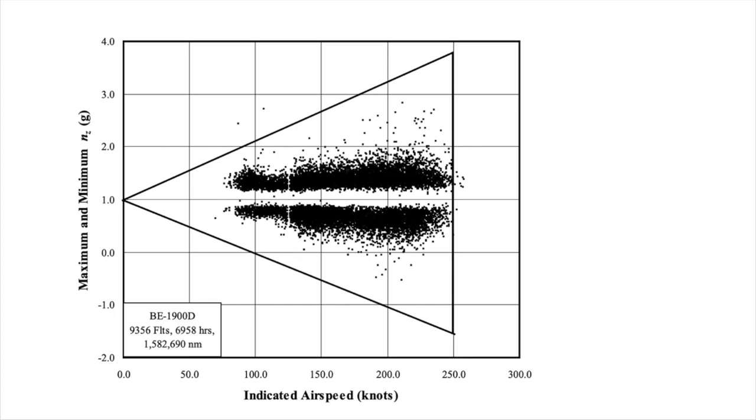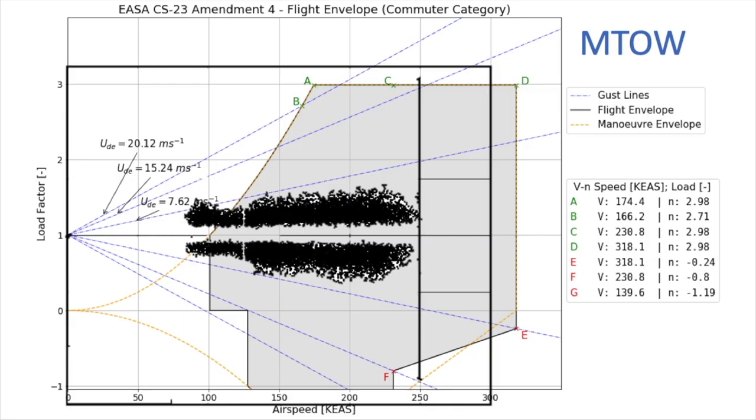Let's now look at the actual load factor versus speed observations recorded on the Beech 1900 commuters involved in this study. Here is a cloud of VN points recorded over about 1.5 million nautical miles of airline operations. And here is the bulk of this cloud on top of an ADRPy generated VN diagram based on some rough guesses at some of the key parameters of the 1900D. Clearly the load factors are comfortably contained within an estimated flight envelope, except for some of the low speed data.